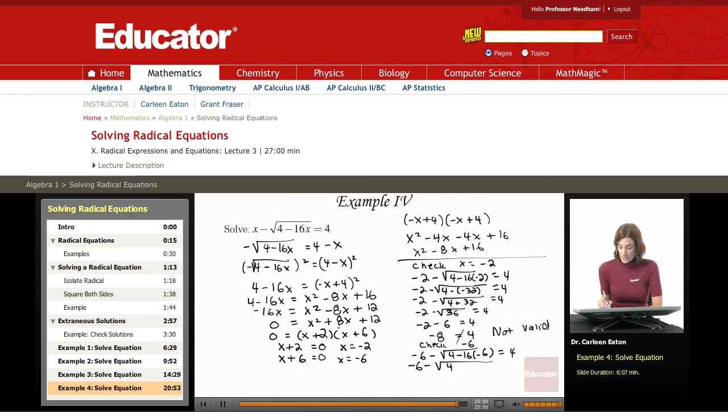I'm going to go ahead and combine a couple steps here. So 16 times negative 6 is negative 96, but this is a negative outside, so that negative times the negative becomes positive 96 equals 4. So this is negative 6 minus the square root of 100 equals 4.